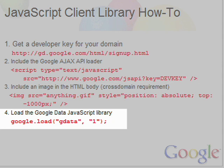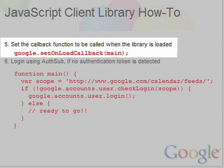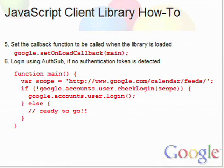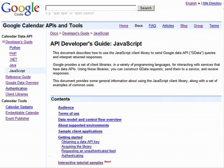Step four: you need to use the loader to load in the JavaScript client library. Step five: you need to set the callback function to be called when the library is loaded and ready to go. Step six: inside the callback function, you first need to check if the user has logged in. If not, you need to redirect that user to the Google account page to log in. The user will then be returned back to your page when they are authenticated. Now you're ready to use the JavaScript client library to make calls to the Calendar Data API.